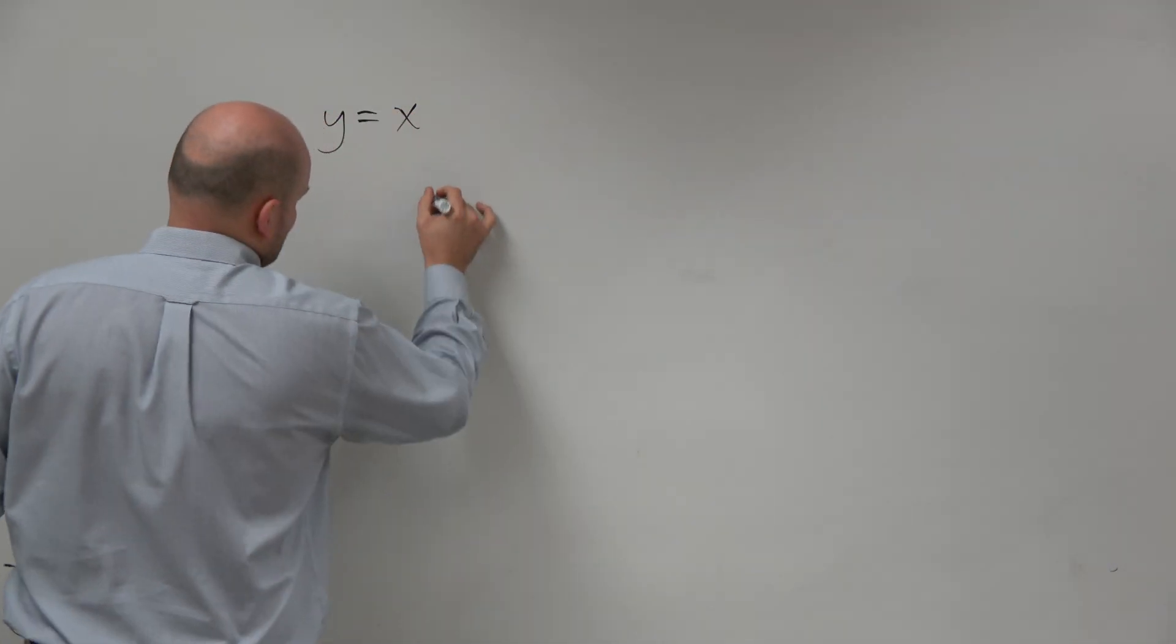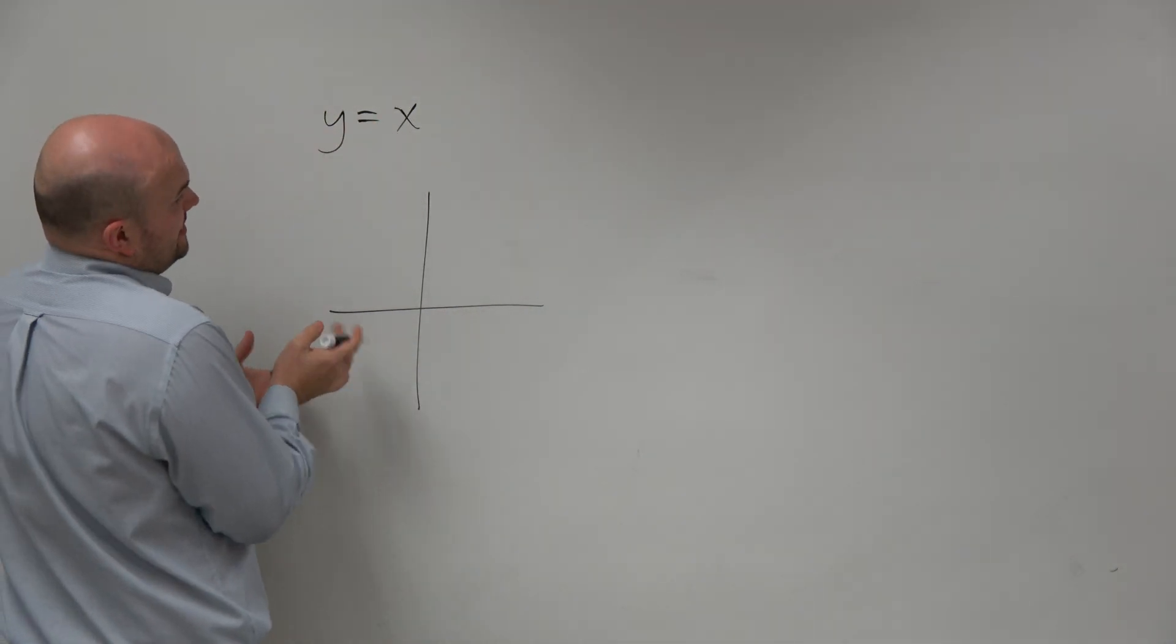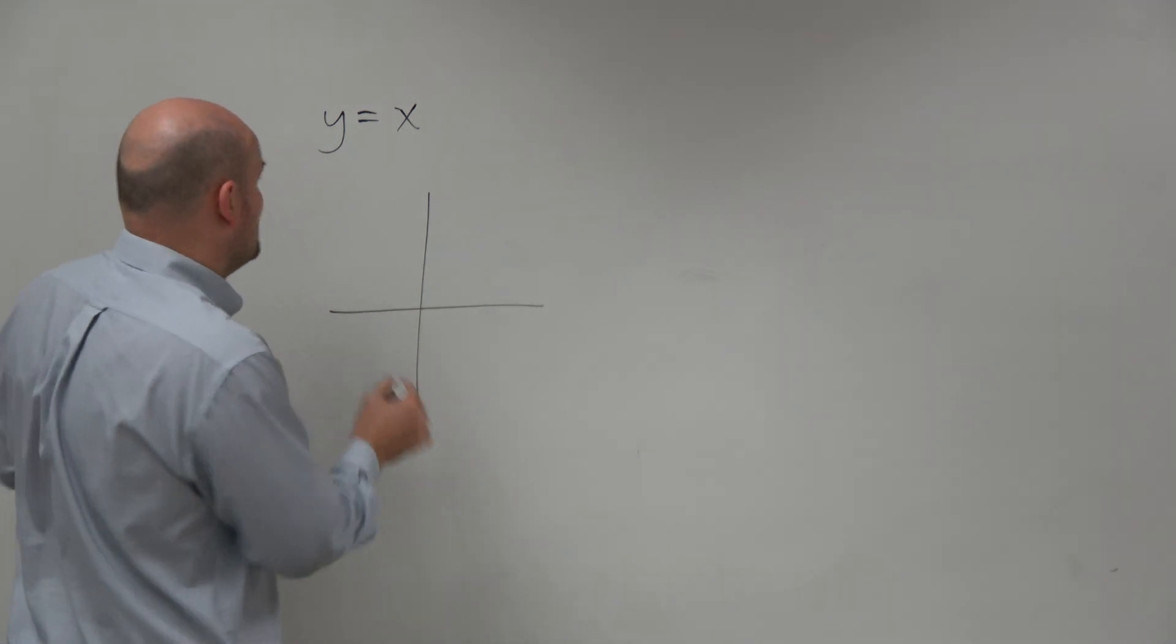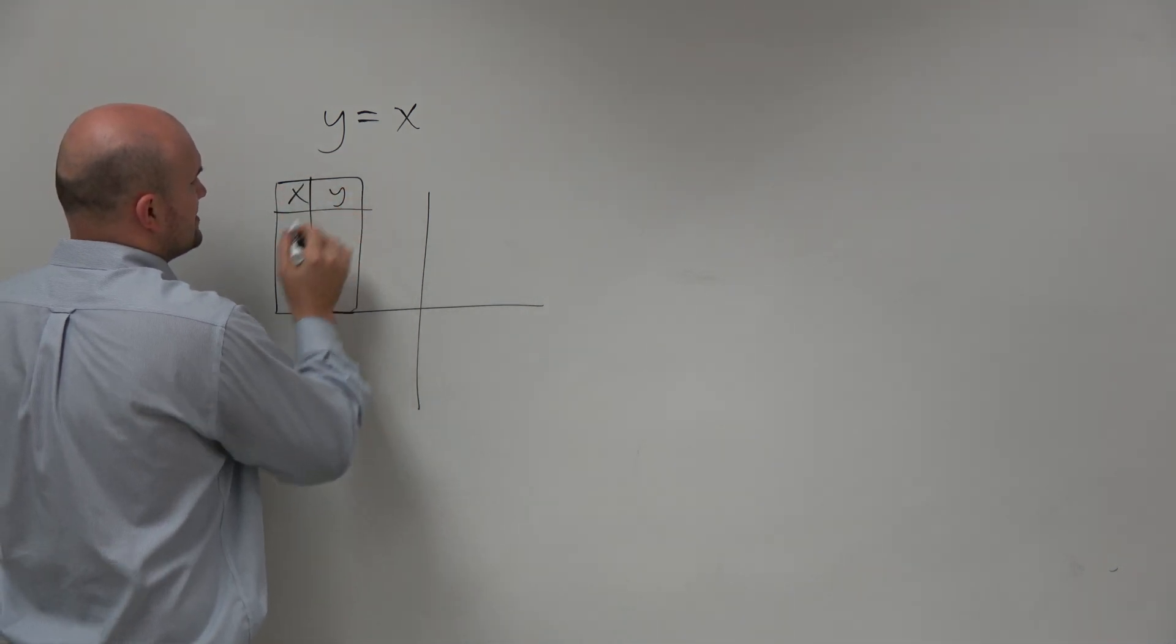If we're going to sketch a quick little graph of the identity function, some of us might know exactly what that looks like, or we might have to look at a table. I think using a table of values is going to help us out.